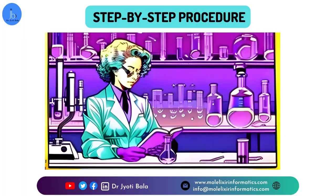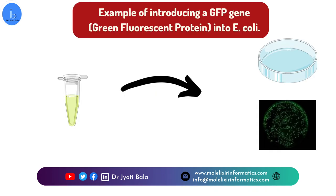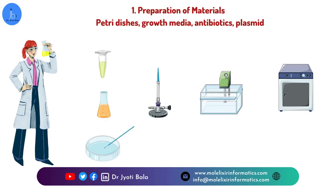Now let's walk through a step-by-step process of bacterial transformation using the example of introducing the GFP gene — that is, green fluorescent protein — which is commonly used in biotech labs. To introduce the GFP gene into E. coli, the first step is preparation of materials. Gather the necessary materials including sterile petri dishes, growth media, antibiotic selection marker, and the GFP gene-containing plasmid.